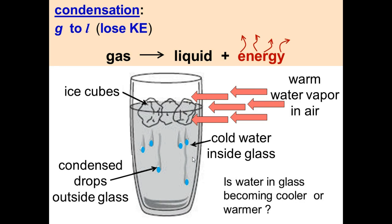Quick question: is the water in the glass becoming cooler or warmer? The glass is cold, the room is warm, and condensation is happening. The warm gas water vapor loses energy when it touches something cold, and that heat has to go somewhere — it goes into the glass. So technically the glass is becoming warmer because of this heat transfer. Remember: heat is always transferred from hot to cold.